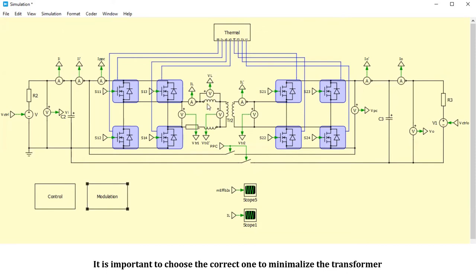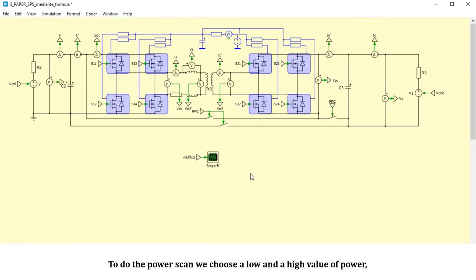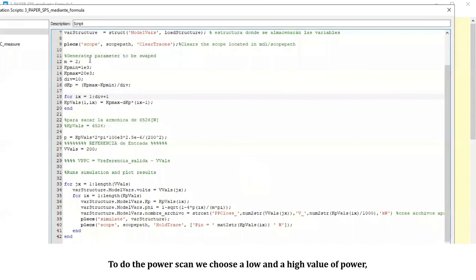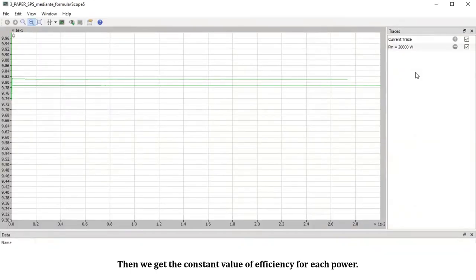To do the power scan, we choose a low and a high value of power and the number of intervals between each value. Then we get the constant value of efficiency for each power.